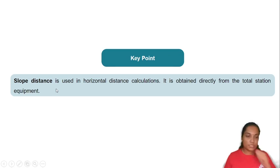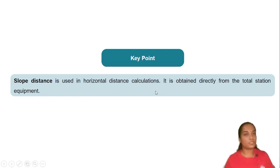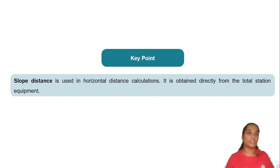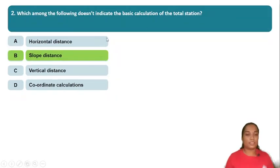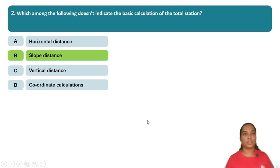The question asks about slope distance used in horizontal distance calculation. Slope distance is used to calculate the horizontal distance — we have to calculate the horizontal distance from the slope distance.